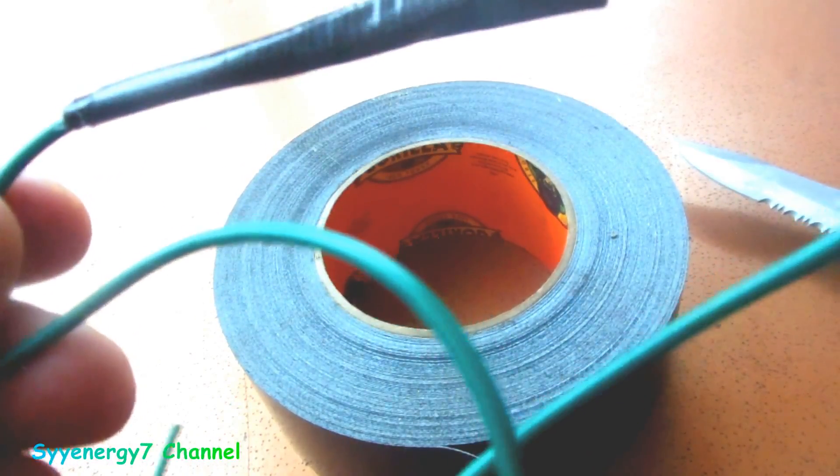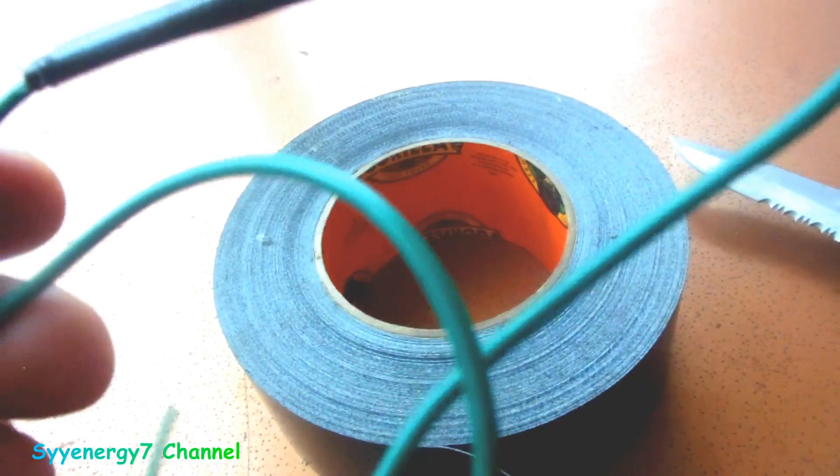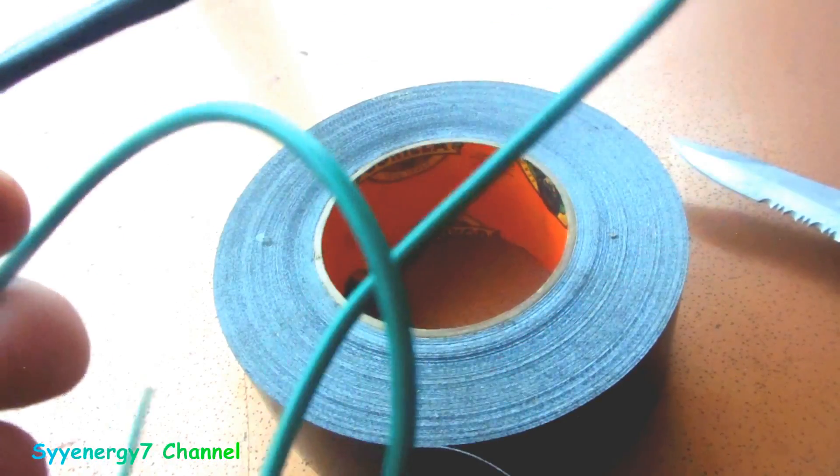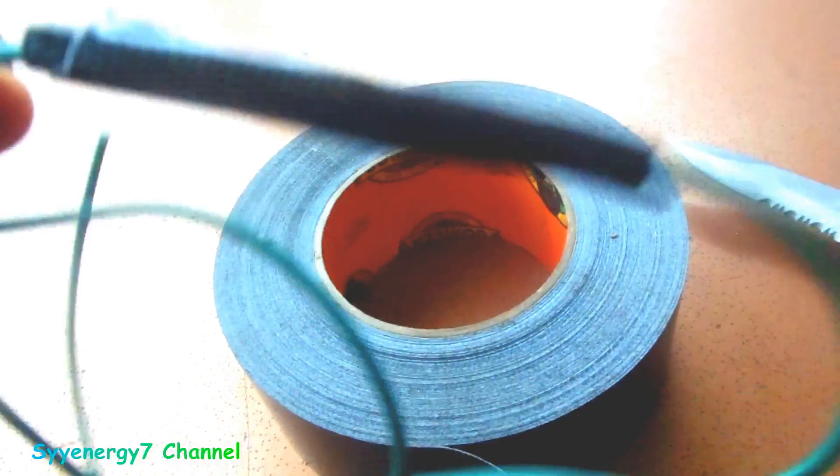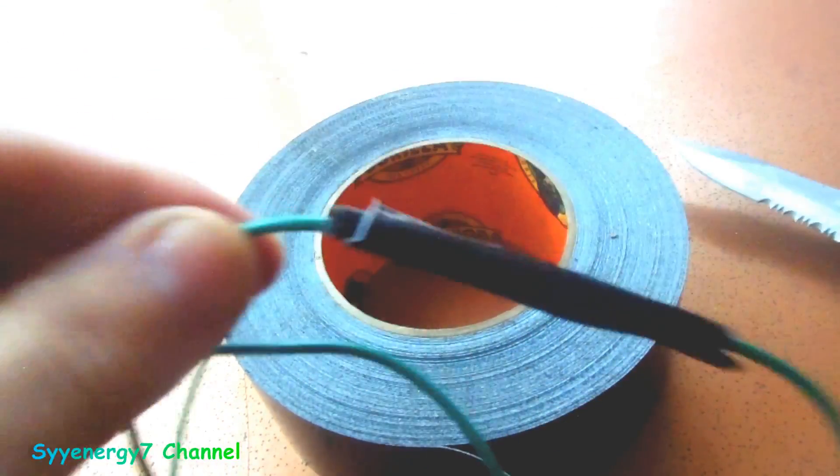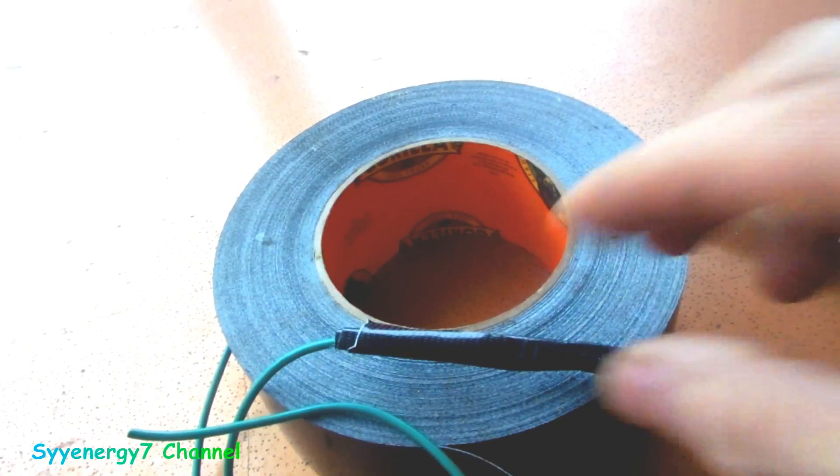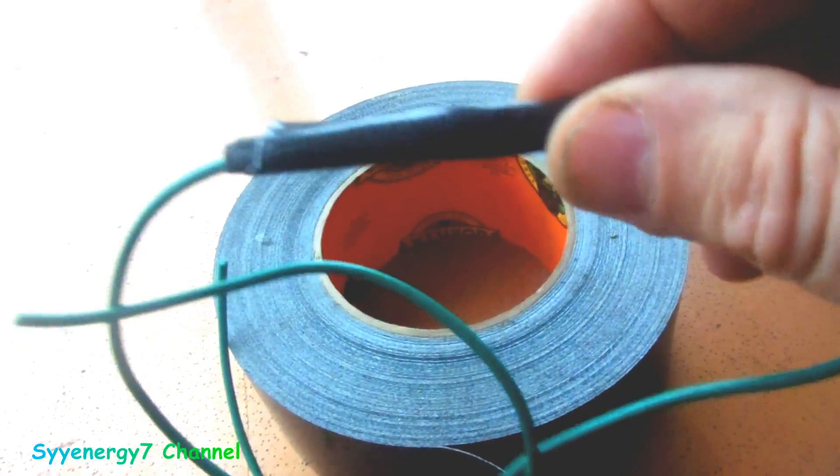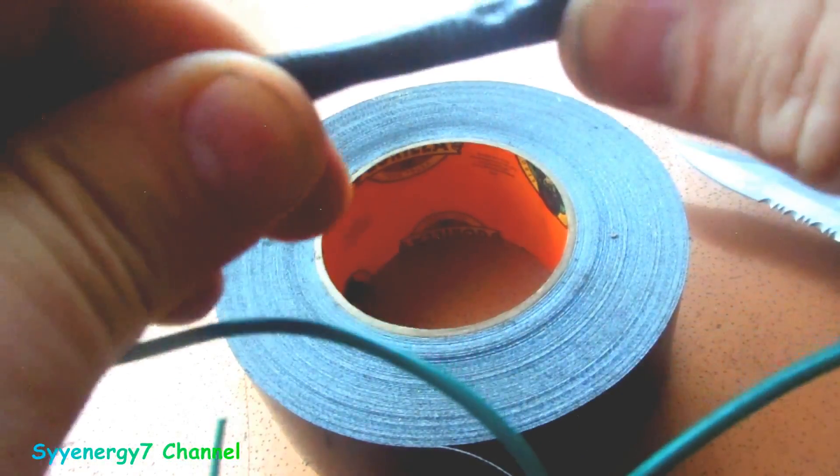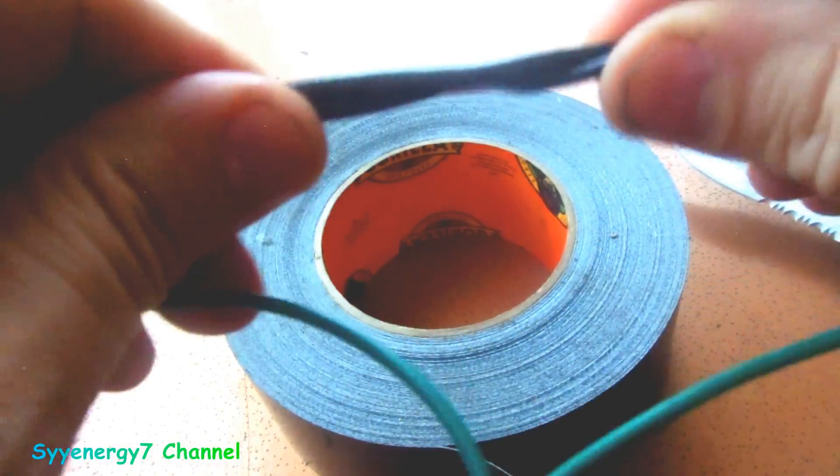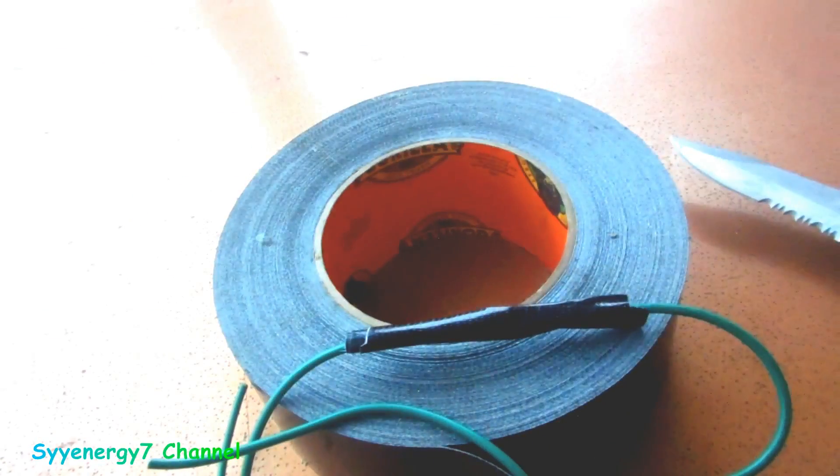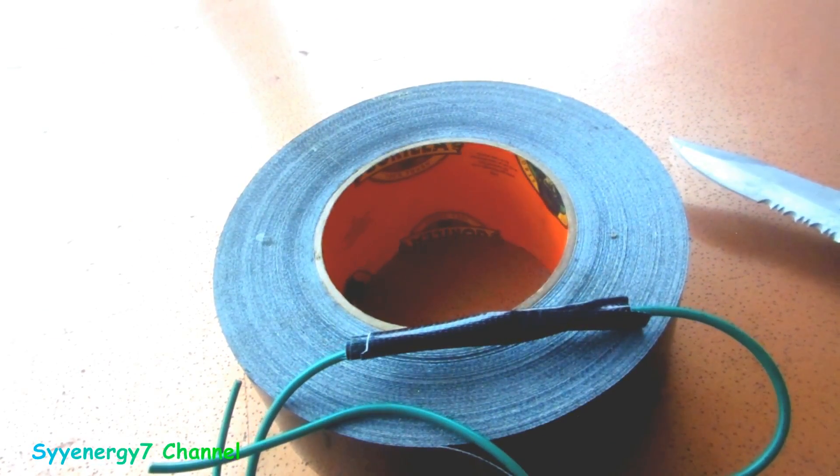If you're splicing in a tail light on a car or boat trailer or whatever the hell it is, this method will work. If you add a little solder to this, forget about it man. Now, of course you could use heat shrink tubing, but I'm not even convinced that heat shrink tubing is stronger than this Gorilla tape. This Gorilla tape is pretty strong stuff. So anyway, that's how you do it.